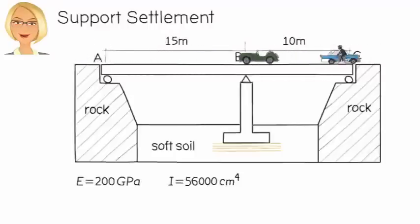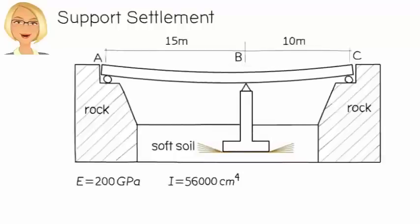After the bridge has been constructed and operational for some time, the soft soil under the structure settles, causing a downward displacement of the substructure by 50 millimeters. Consequently, point B displaces downward by the same amount.